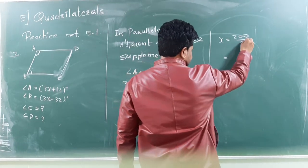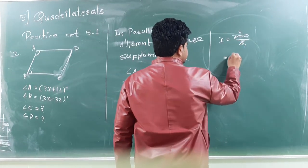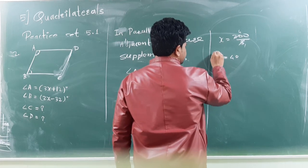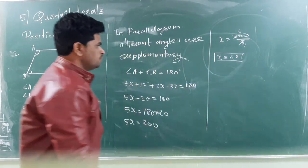So, this is 5 into 40, that means 40. So, the answer is, X is equal to 40 degrees.